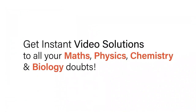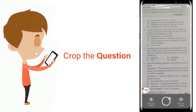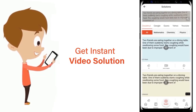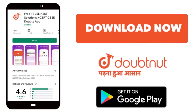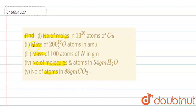With DoubtNet, get instant video solutions to all your maths, physics, chemistry and biology doubts. Just click the image of the question, crop it, and get instant video solutions. Download the DoubtNet app today. Hello everyone, the question is we have to find: the first — number of moles; second and third — mass; fourth — number of molecules as well as atoms; and fifth — number of atoms in 88 grams of a substance.